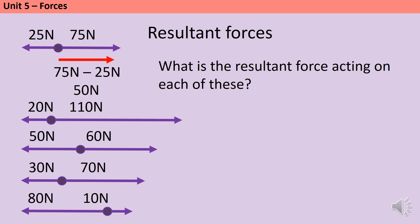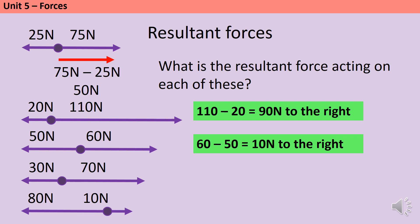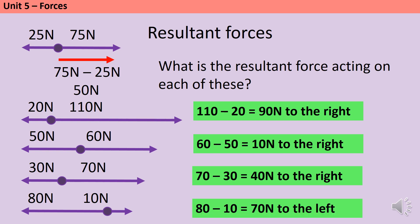The difference between 110 and 20 is 90 newtons, and the bigger force is on the right, so the resultant force is 90 newtons to the right. The difference between 50 and 60 is 10, so 10 newtons to the right. The difference between 70 and 30 is 40, so 40 newtons to the right. And for the last one, the bigger force is on the left and the difference is 70, so 70 newtons to the left.